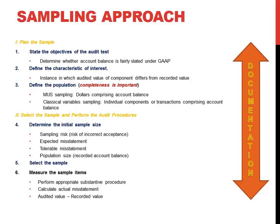Same approach in terms of sampling. You have to plan your sample, then perform your sample and evaluate the results. Similar to when we talked about attribute sampling, same approach. We have to document our samples. We need to know what the objective of the audit is. In this case, variable sampling is used to determine that the account is fairly stated in accordance with generally accepted accounting principles.